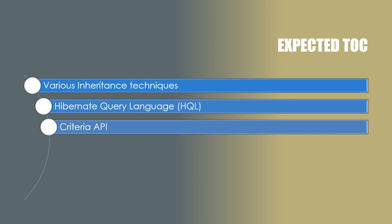After this we are going to cover another important aspect of Hibernate — the Criteria API. This is a little bit tricky part of Hibernate which many people skip, but we will try to make it interesting with the help of our demos.